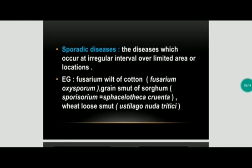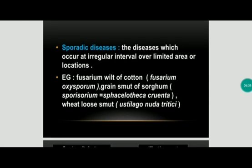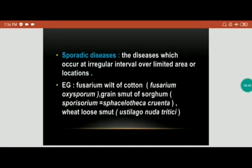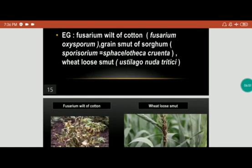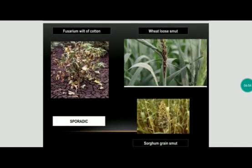Sporadic disease occurs at irregular intervals in certain places — it may occur two months once, then six months once — over a limited area. Examples: Fusarium wilt of cotton caused by Fusarium oxysporum, grain smut of sorghum caused by Sphacelotheca sorghi, and wheat loose smut caused by Ustilago nuda tritici. Pictures shown depict Fusarium wilt of cotton, loose smut of wheat, and sorghum grain smut.